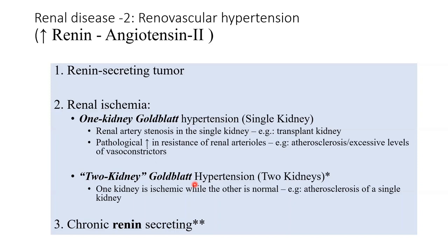Angiotensin 2 will constrict all vessels — it affects the efferent arterioles in both the diseased ischemic kidney and the normal kidney. Aldosterone similarly will work on every distal convoluted tubule in both kidneys. So the normal kidney also behaves in the same way as the ischemic kidney, but for a different reason: the ischemic kidney produces the excess renin, while the normal kidney is just responding to high angiotensin 2 levels.